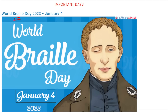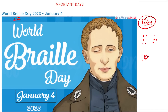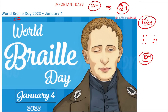World Braille Day is observed on 4th January. Braille is a script/language for blind people — it uses 6 dots, some raised and some pressed. When blind people run their hands over it, they can identify words by the pattern of raised dots. World Braille Day was the 5th edition, and it marked the 214th birth anniversary of Louis Braille, who discovered the Braille script.